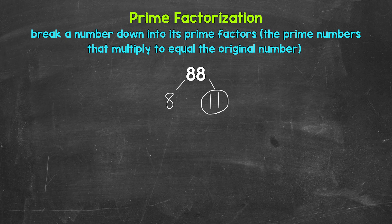Now 8 we can break down further, so we need to think of factors here. Well, 2 and 4 are factors of 8. So let's break 8 down into 2 and 4. Now 2 is a prime number, so we are done here.